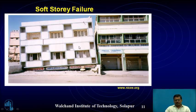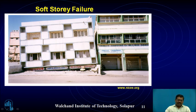Another example of soft story failure involves two adjacent G+2 structures. In one structure, the ground story completely failed and the building came down — a classic soft story failure. The earthquake hit the soft story, completely collapsed it, and the building came down.